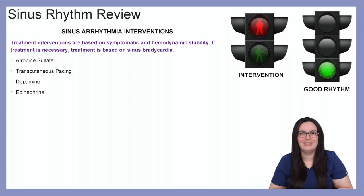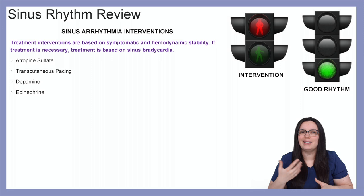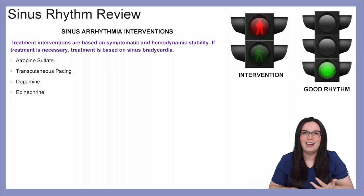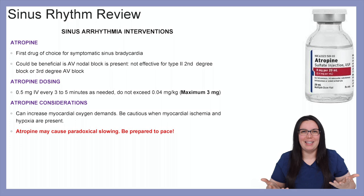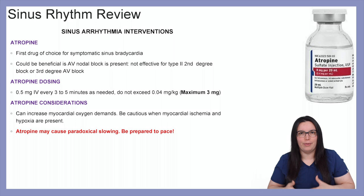How do we treat sinus arrhythmia? Treatment interventions are based on symptoms as well as hemodynamic instability. If treatment is necessary, we're going to treat it based on what we use for sinus bradycardias — atropine, transcutaneous pacing, dopamine, and epinephrine. To begin, atropine is our first drug of choice for symptomatic sinus bradycardias. It can also be used in AV nodal blocks.